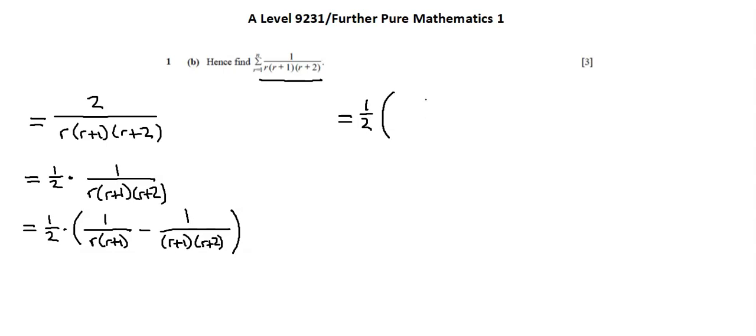So I have 1 half times, I'm beginning with r equals 1. So the first term is going to be 1 over r is 1 times r plus 1, or 1 plus 1 is 2, minus 1 over r plus 1 is 1 plus 1, 2 times r plus 2, 1 plus 2, 3. That completes the first term.